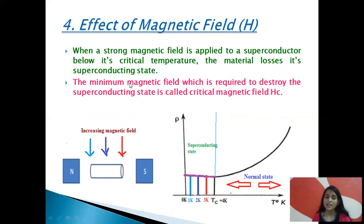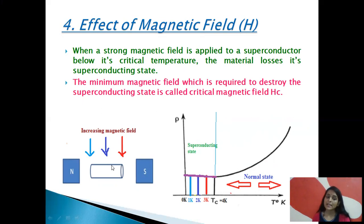Now let us see how the magnetic field affects the superconducting property. When a strong magnetic field is applied to a superconductor below its critical temperature, the material loses its superconducting state. The minimum magnetic field required to destroy the superconducting state is called the critical magnetic field, represented by HC. At an ordinary value of magnetic field, the superconducting material does not lose its superconducting property and behaves like a superconductor.